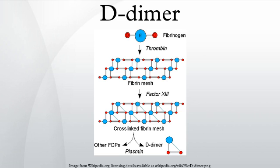D-dimer is a fibrin degradation product, a small protein fragment present in the blood after a blood clot is degraded by fibrinolysis. It is so named because it contains two cross-linked D-fragments of the fibrin protein. D-dimer concentration may be determined by a blood test to help diagnose thrombosis.